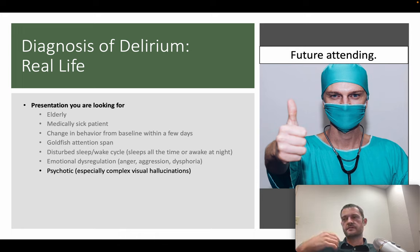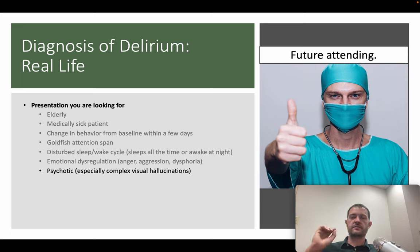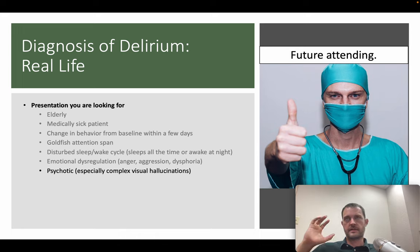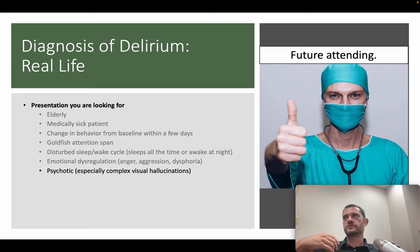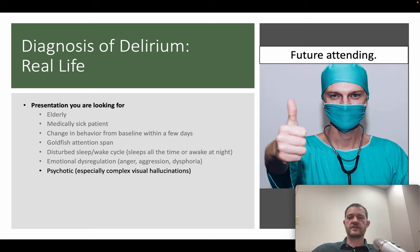New-onset psychosis is a red flag, especially when it includes complex visual hallucinations. For organic psychosis — such as delirium, encephalopathy, or brain trauma — you'll typically see well-formed visual hallucinations: little children running around, little animals that are well-formed, making sounds, moving around. Inorganic psychosis like schizophrenia or bipolar with psychotic features more commonly presents with auditory hallucinations and delusions. Always think organic versus inorganic when new psychosis appears.